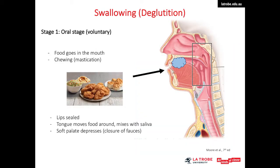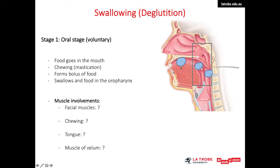During the oral stage, food must first be in the mouth. The lips close and the cheeks push the food inward so it can be placed between the teeth and crushed during mastication. The food gets mixed with saliva and becomes moistened. The tongue and teeth work together to form a bolus of food. Then the tongue starts from the front, presses the bolus against the hard palate, and the tongue elevates, pushing the food toward the oropharynx.